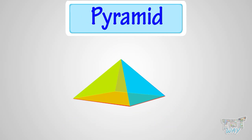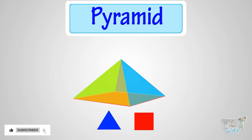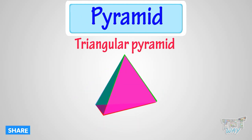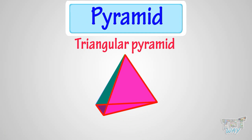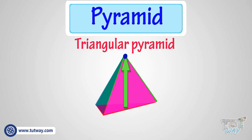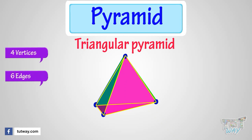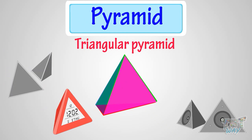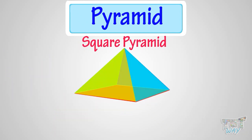Most common pyramids are with triangle and square bases. Here are examples. This is a triangular pyramid because its base is a triangle and all other faces are triangle and converge to a single point. It has four vertices, six edges, and four faces.